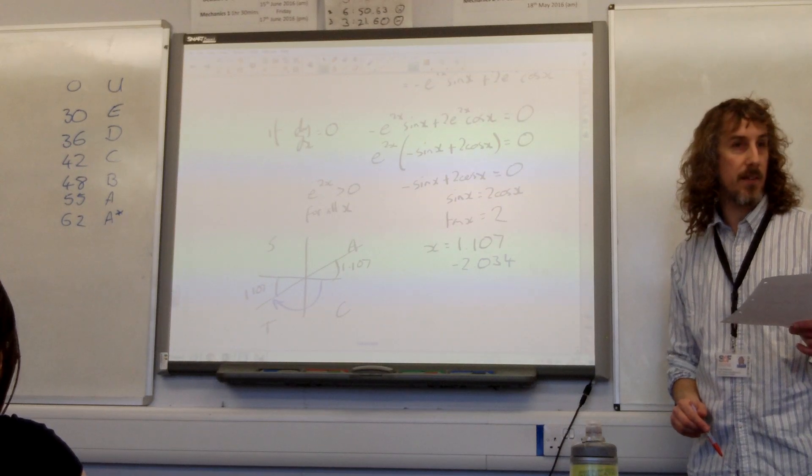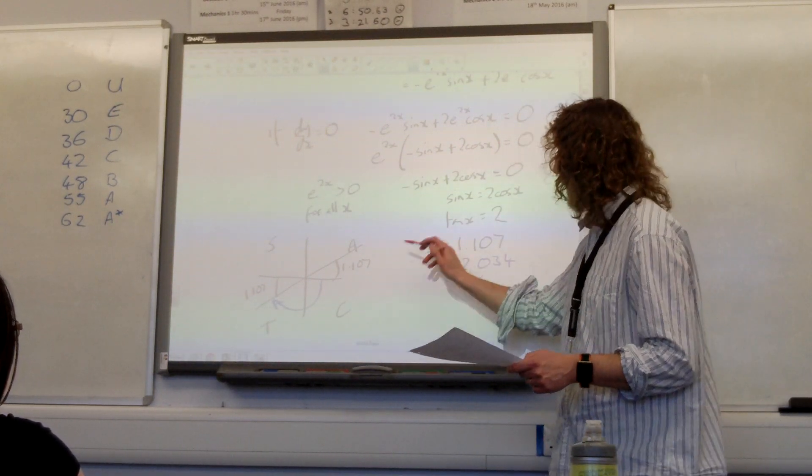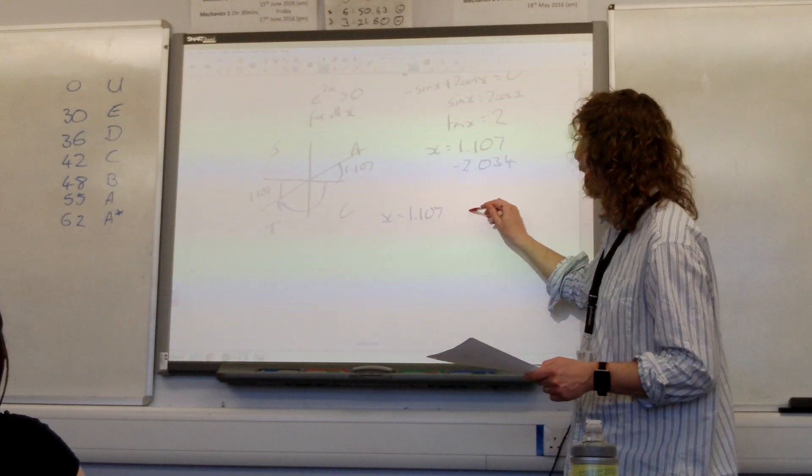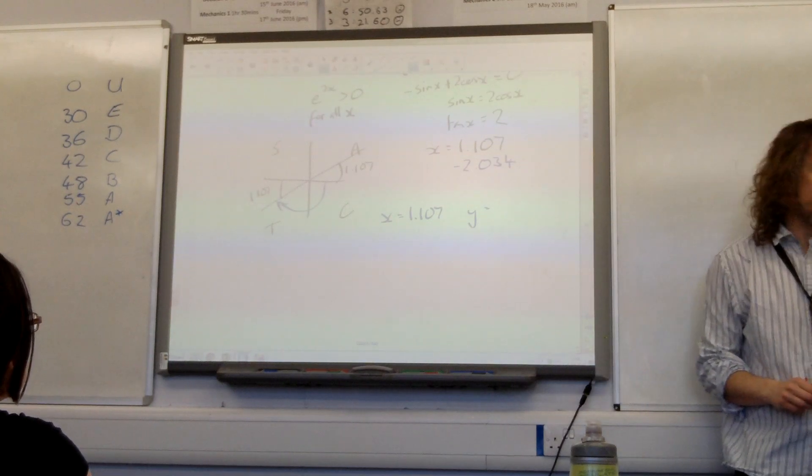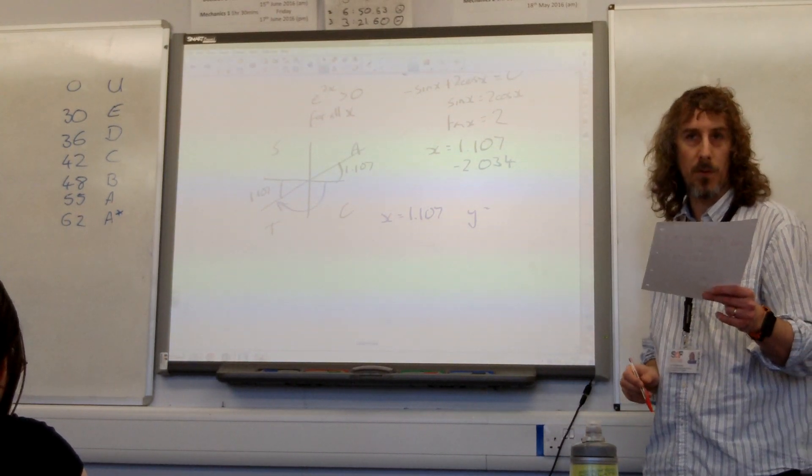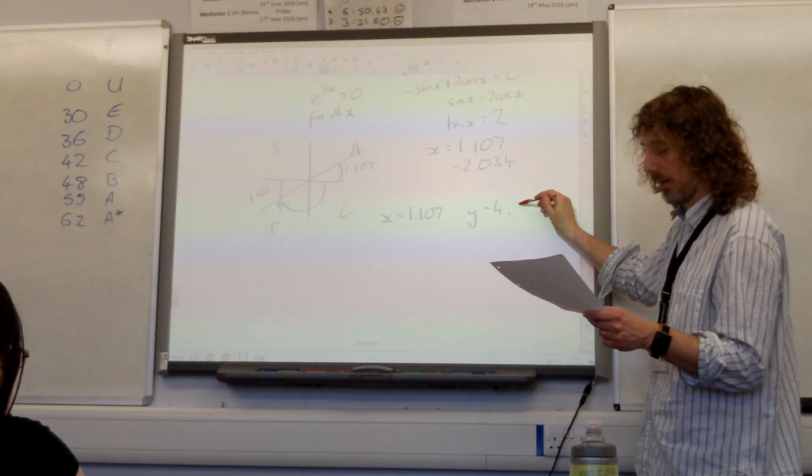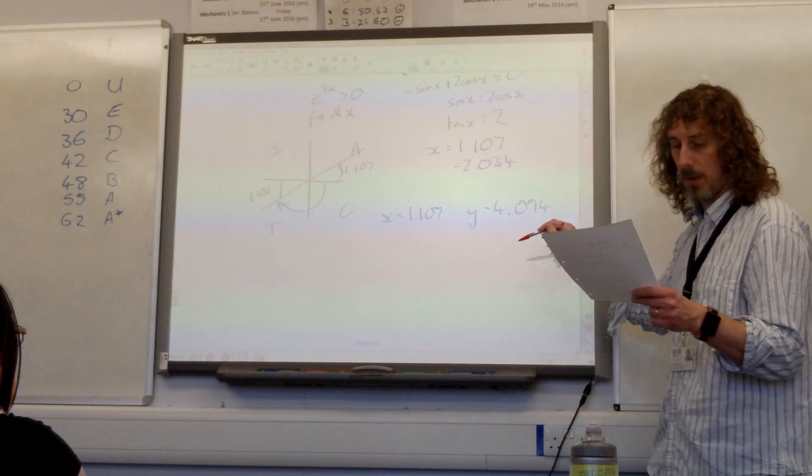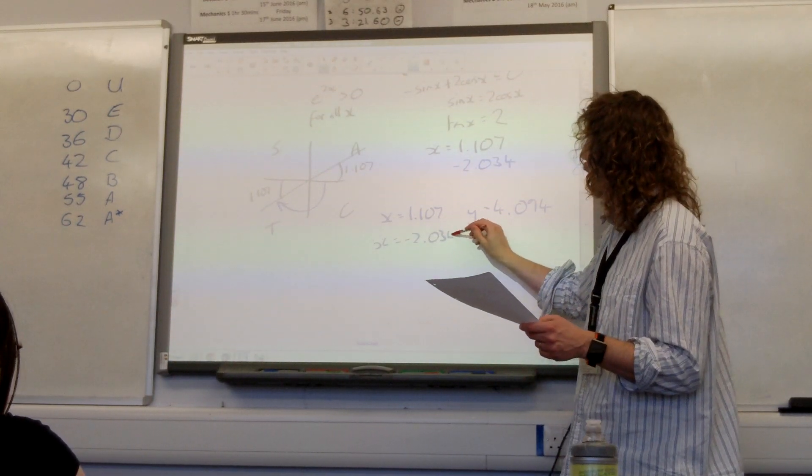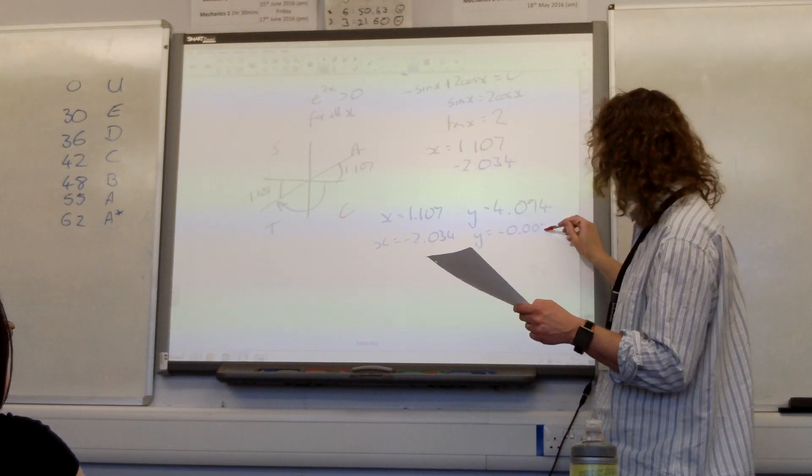The question said, find the y value. So if we go to the y values then, if x = 1.107, the y value associated with that, subbing it back into the original equation, e^(2*1.107)*cos(1.107), is 4.094. And if x is -2.034, y gives us -0.00765.